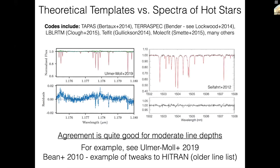There are a lot of great codes that do this. Some examples are TAPAS, TerraSpec, LBLRTM, Telfit, Molecfit. In general, for lines of what I would call moderate optical depth, the agreement is quite good. There are a lot of nice examples in the literature where you have an observation of a hot star, you overlay a calculated model, and the agreement is quite good, a percent or a couple of percent, maybe.